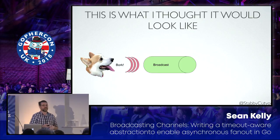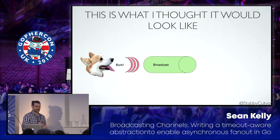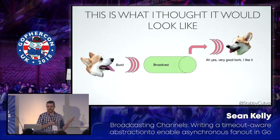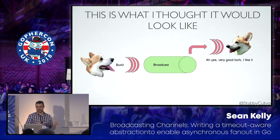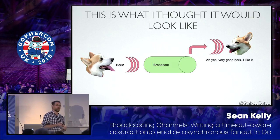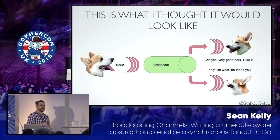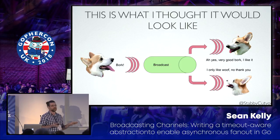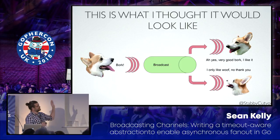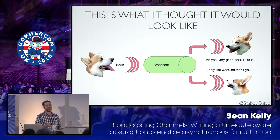I had this idea that a dog might make a nice friendly bork into a channel, and then maybe one receiver would say 'yes, this is a very good bork and I want more borks,' and another receiver might say 'no thank you, I only like woofs — give me all the woofs, do not give me the borks.' This is really what I thought it would look like in my head when I was writing this at the outset.